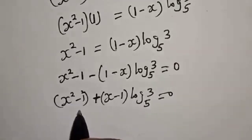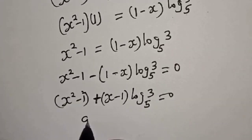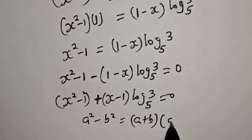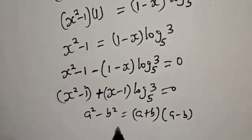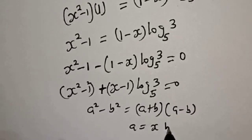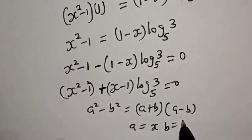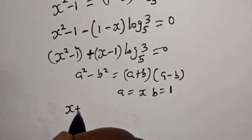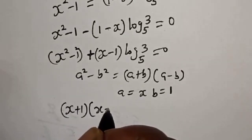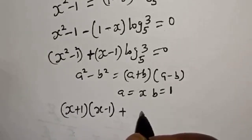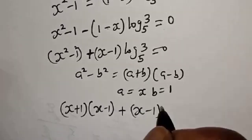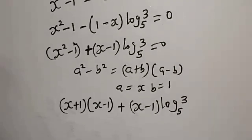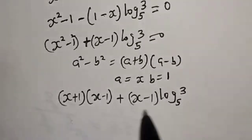Note that s squared minus 1 is a difference of two squares: a squared minus b squared equals (a plus b)(a minus b), where a equals s and b equals 1. So we get (s plus 1)(s minus 1) plus (s minus 1) log base 5 of 3 equals 0. Since s minus 1 is common, we factor it out: (s minus 1) times (s plus 1 plus log base 5 of 3) equals 0.